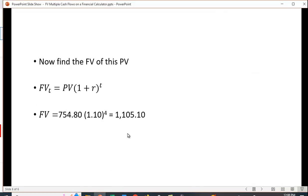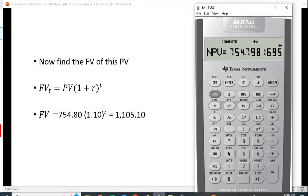Now what do we do? We can just find the future value of the 754.80, which is 754.80 times 1.10 to the fourth power, which gives us the same value. Let me just verify this.